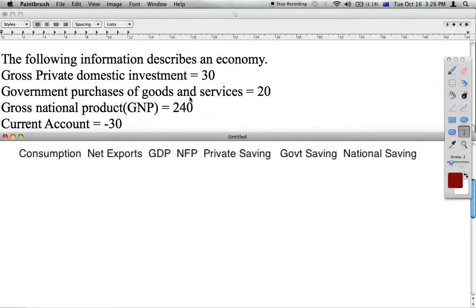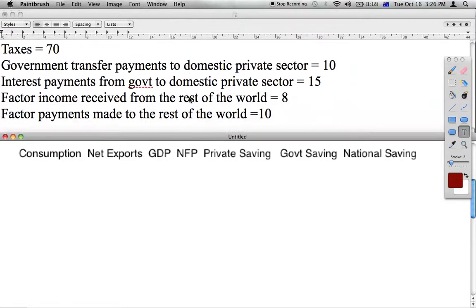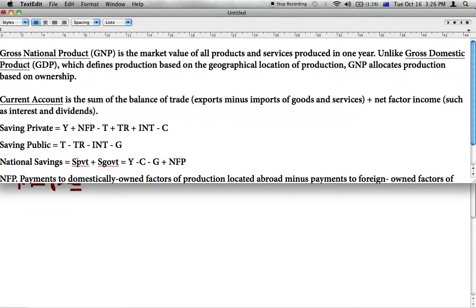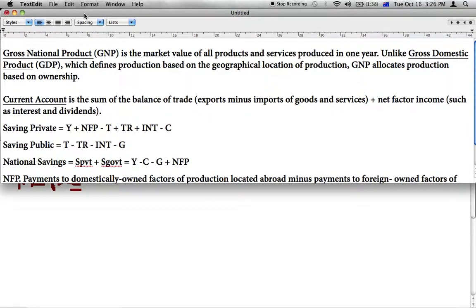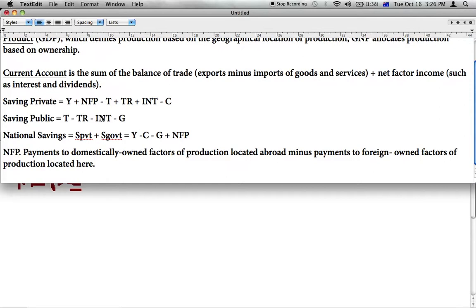So, looking at the information, we have been given both factor income received from the rest of the world and factor payments made to the rest of the world, which would be the reason why I would start with net factor payments. Net factor payments are payments to domestically-owned factors of production located abroad minus payments to foreign-owned factors of production located here.